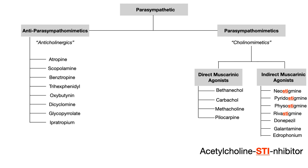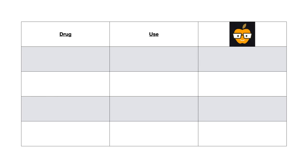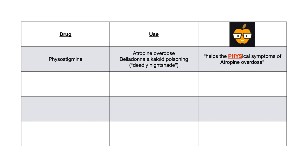Four of these are the highest yield for test day. Physostigmine is used in atropine overdose and belladonna alkaloid poisoning — deadly nightshade. Just as atropine is used to treat cholinergic poisoning, physostigmine is used to treat atropine overdose or anti-cholinergic poisoning. My mnemonic: 'fizz' in physostigmine helps you remember it treats the physical symptoms of atropine overdose.